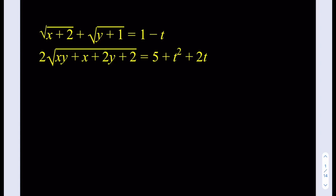We have the system: the square root of x plus 2, plus the square root of y plus 1, is equal to 1 minus t. And then we have another radical expression being equal to 5 plus t squared plus 2t. So t is a parameter here, and we're looking for all possible real solutions.